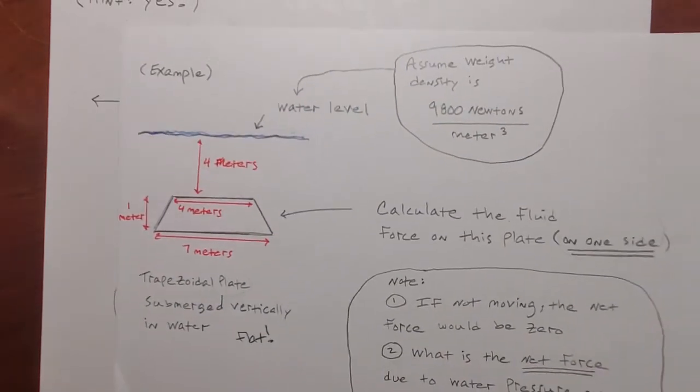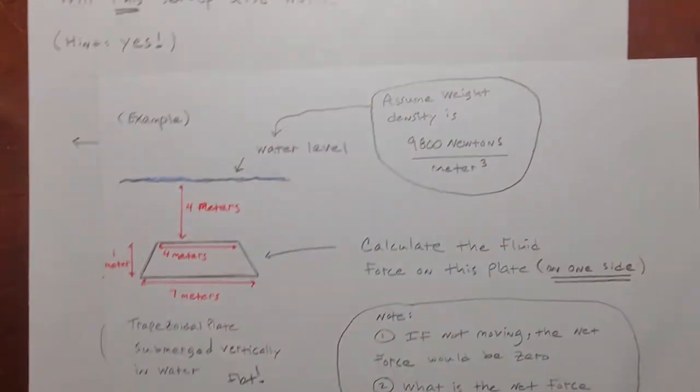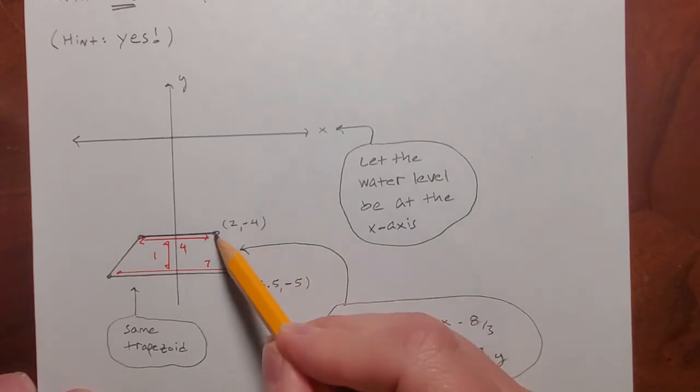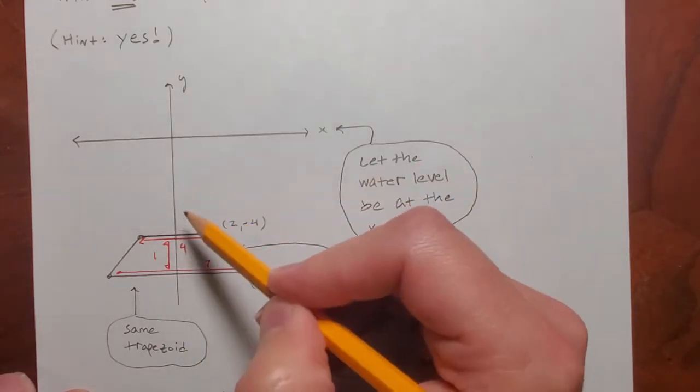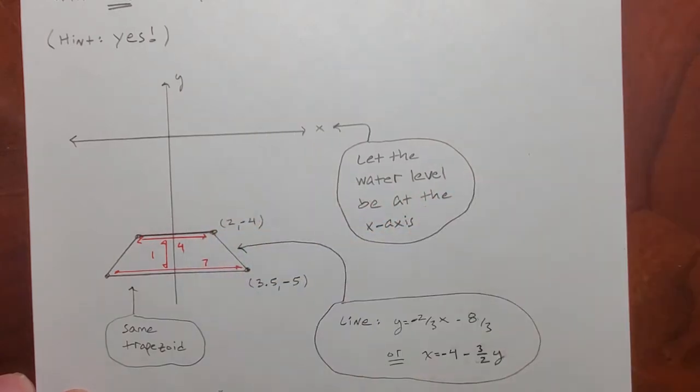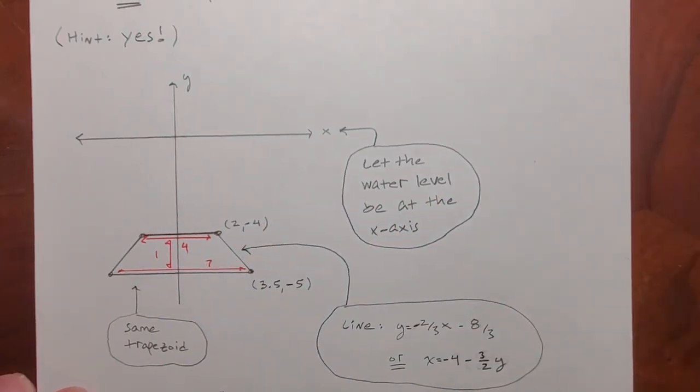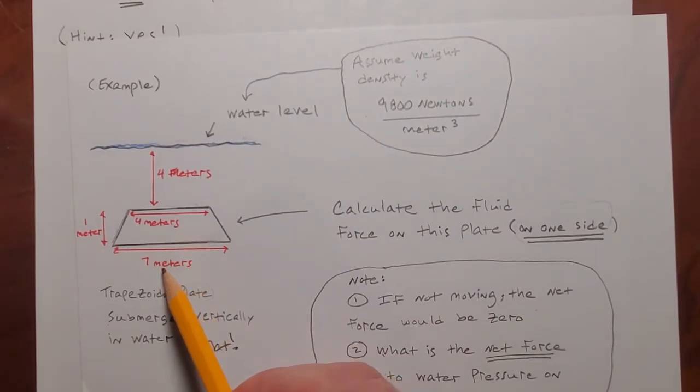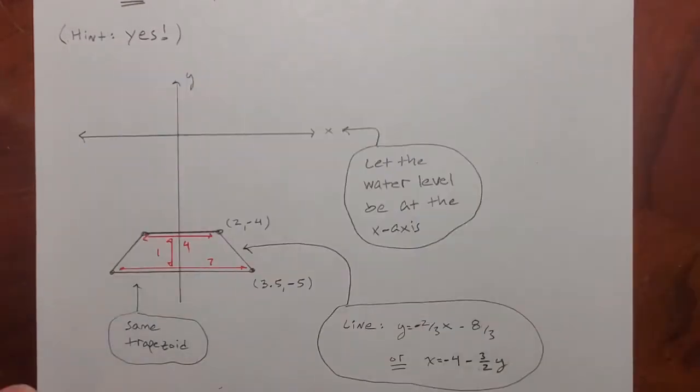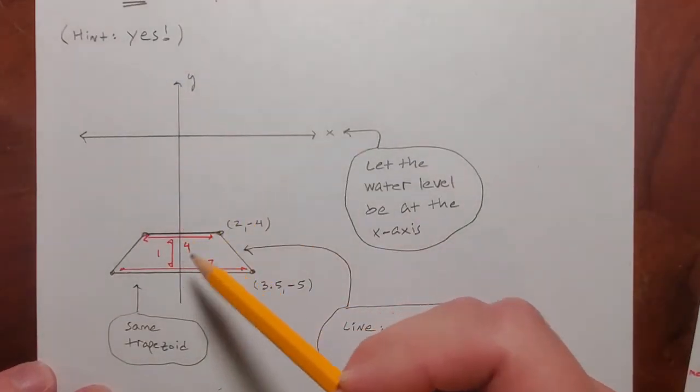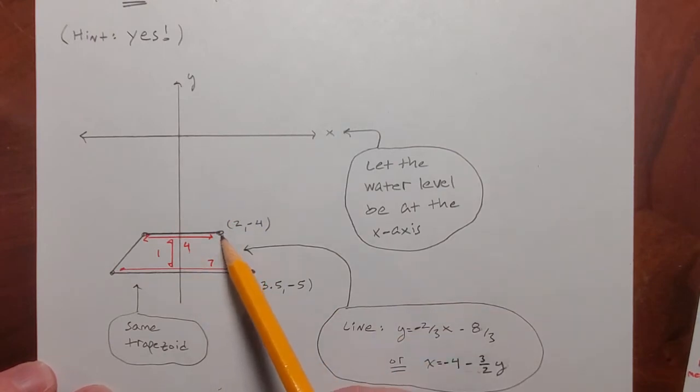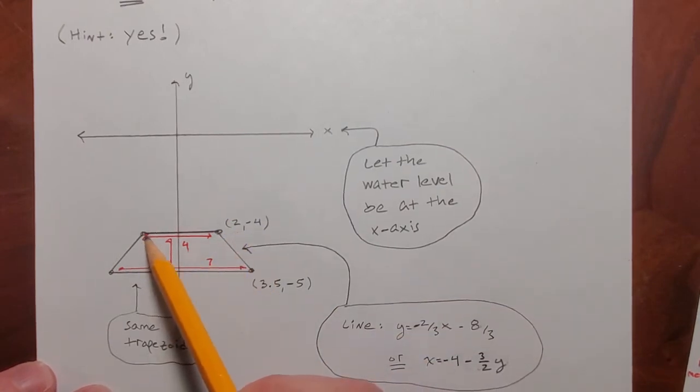Given that it's 4 meters below the water level, then that would put this top y-coordinate at negative 4. Okay, that does put a gap here of 4, so that's consistent. But then the width along the top was 4, and the width along the bottom was 7. So if I put the y-axis right through the middle, that makes this x-coordinate 2, and this one will be at negative 2.